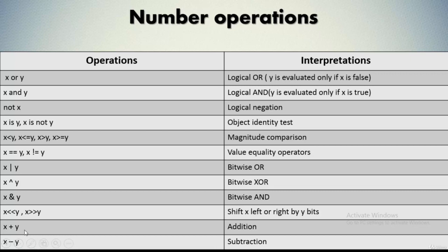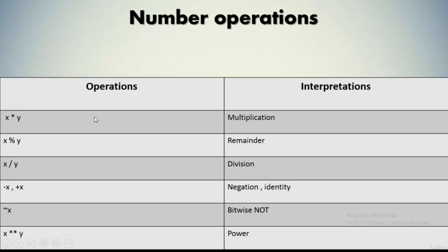Then we have the addition operation, which is the general mathematical operation, and the subtraction operation applied as in arithmetic. Next we have the multiplication operation — if you're going to multiply two number type values, you use the multiplication symbol. Then we have the modulo operation using the percent operator, which evaluates to the remainder when x is divided by y. We also have the division operation, which is the normal mathematical operation.